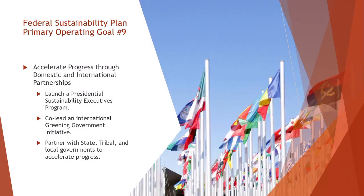The Federal Sustainability Plan outlines an ambitious path to leverage domestic and international partnerships to accelerate progress and catalyze greater action at home and abroad. We will place senior leaders from the private and nonprofit sectors into limited-term appointments to bring innovative perspectives and expertise to assist Federal agencies with sustainability and climate preparedness efforts. We have also launched the Greening Government Initiative, a first-of-its-kind forum for engaging governments around the world in greening government operations. The Federal Government will partner with state, tribal, and local green governments to enable information and best-practice sharing to accelerate sustainability initiatives at every level of government.